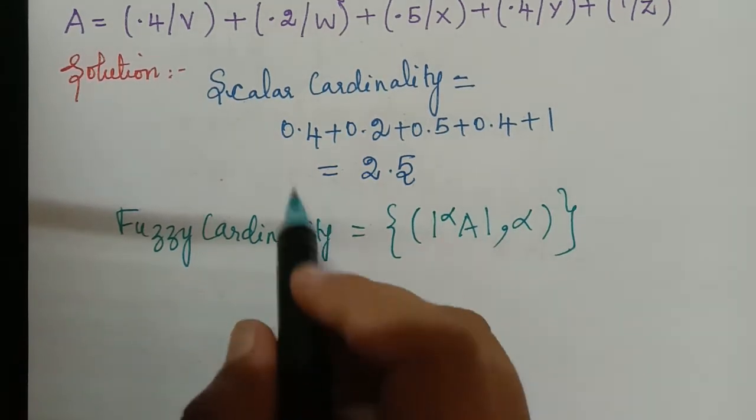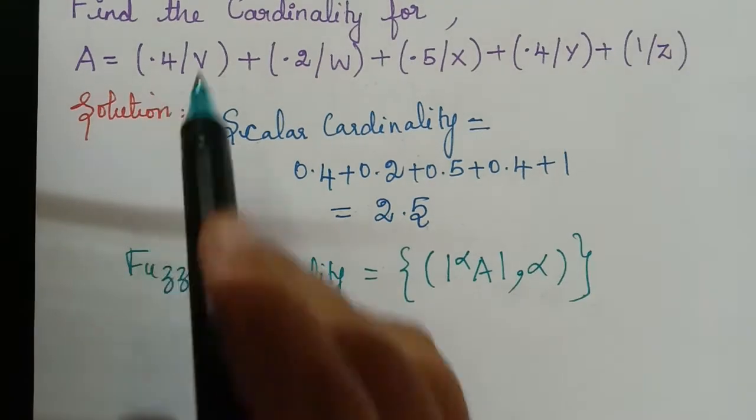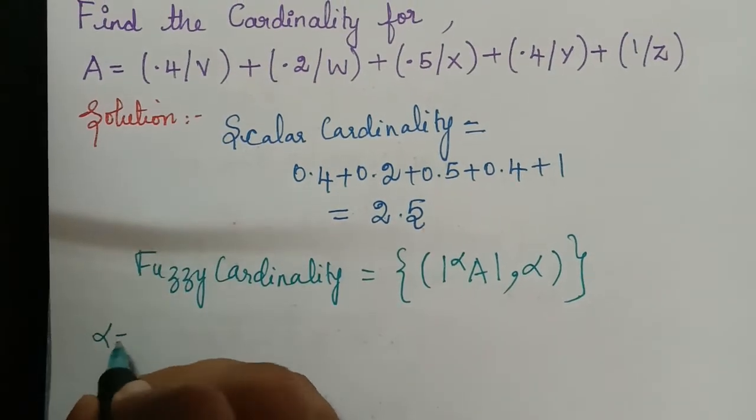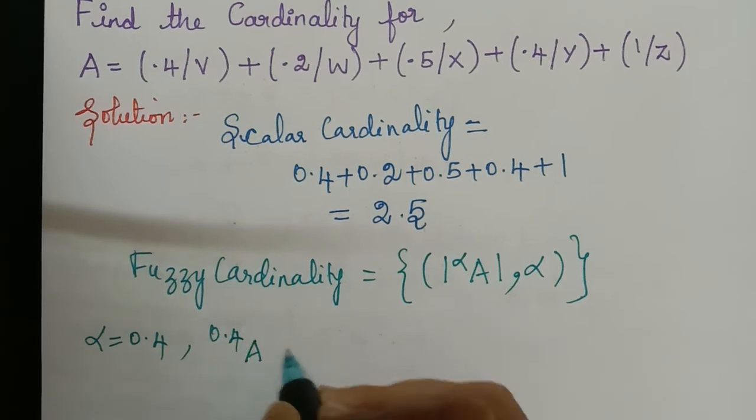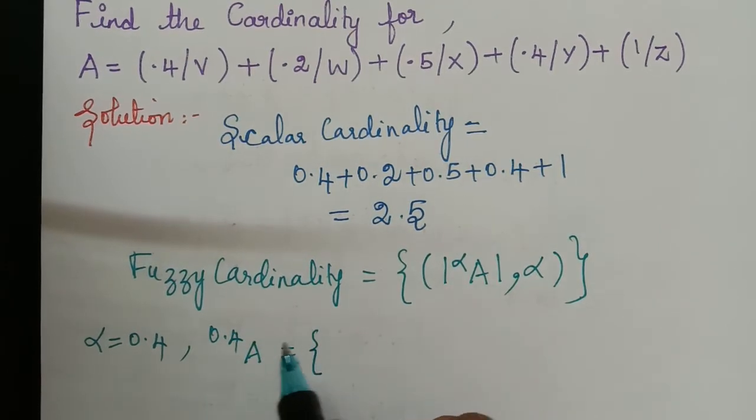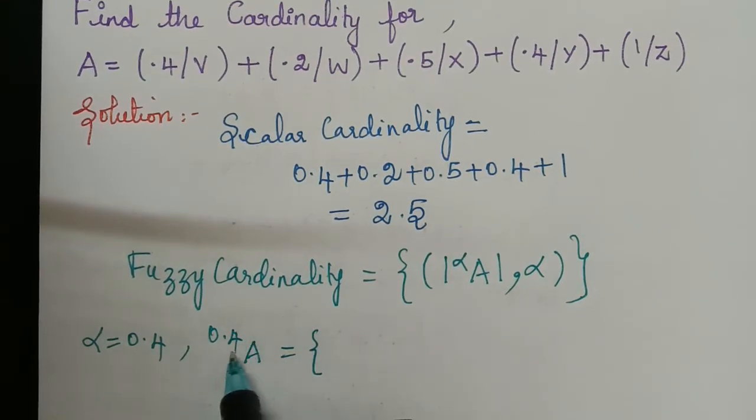That is the first value of alpha will be 0.4. So for alpha equal to 0.4 what will be 0.4 alpha cut of A? It will be equal to the set of all elements for which the membership grade is greater than or equal to 0.4.